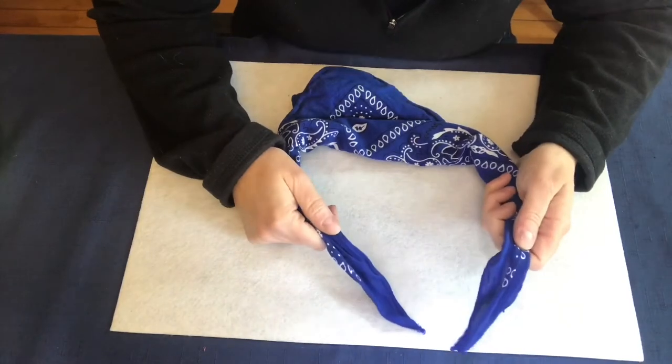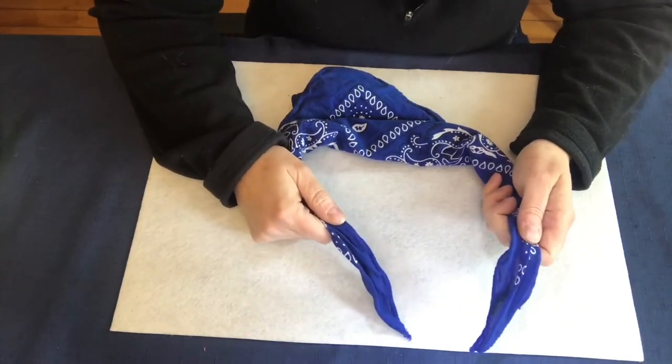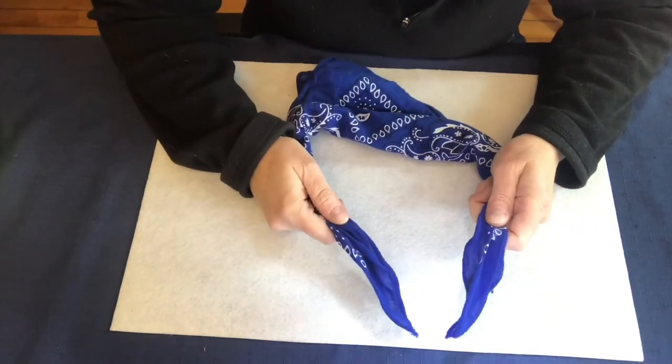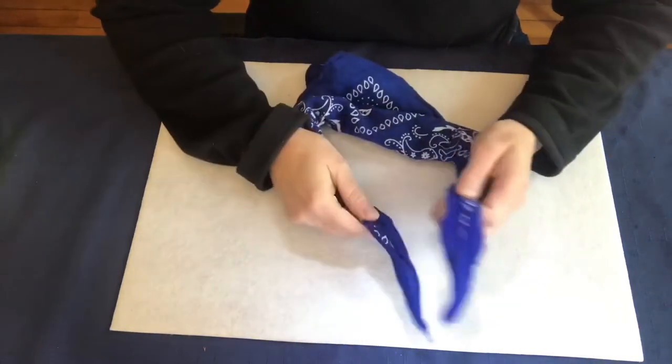The reef knot is a basic knot for binding down an object. It is also known as a square knot. It's best known for tying the neckerchief on a sailor's uniform.